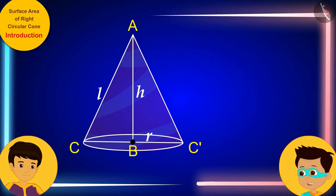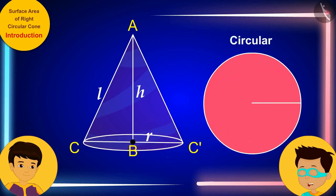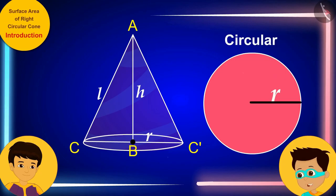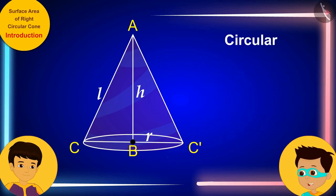And do you know, Manas, if the base of the cone is supposed to be kept closed, we will need a circular piece of paper with radius r to cover the base. The area of this circular piece of paper will be pi r squared.